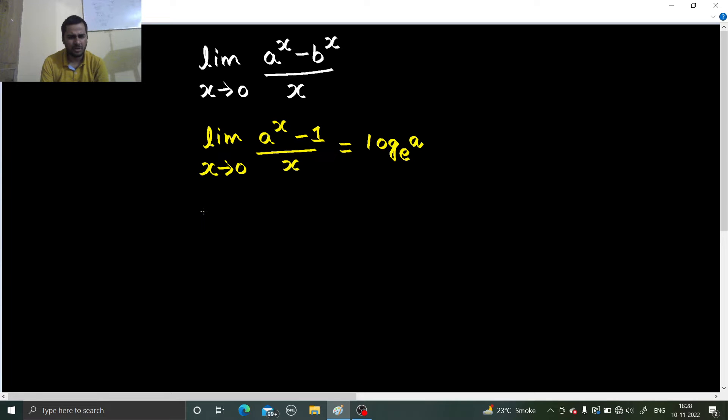Similarly, you don't need to remember the other formula because you can look for similarity. e power x minus 1 divided by x. So see, in place of a we have e. So just replace a by e here. So log e base e, so this is one. Fine, but don't need to remember two formulas. Just remember this one.